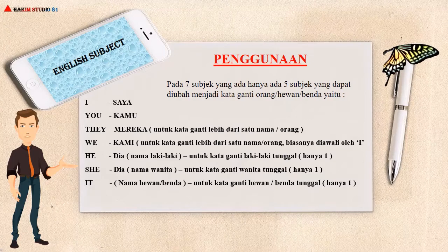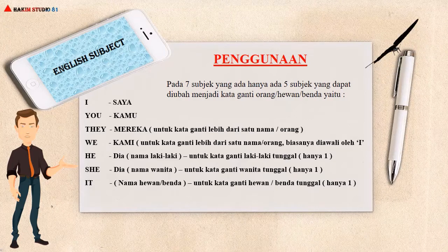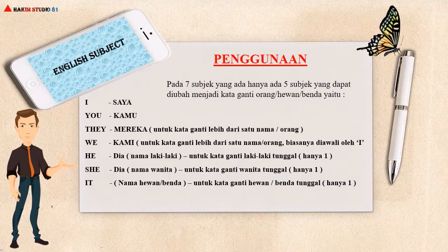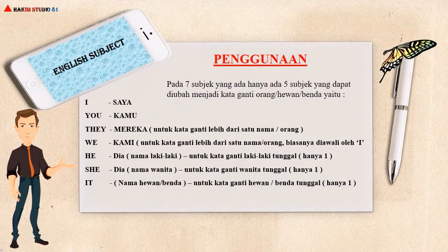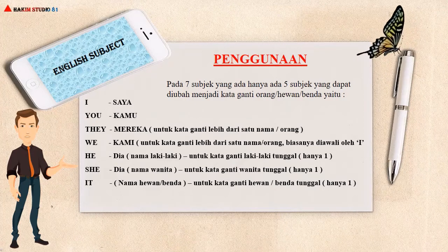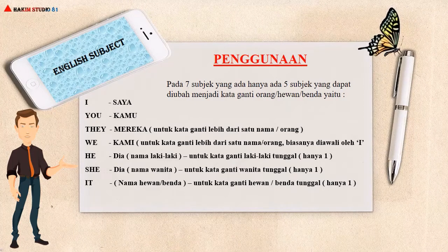Kemudian, subjek We digunakan untuk kata ganti lebih dari satu nama. Biasanya diawali oleh I, lalu dilanjutkan nama-nama lain. Contoh: I and Budi, I and Tina, dan lain-lain.